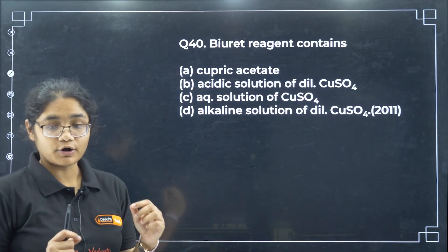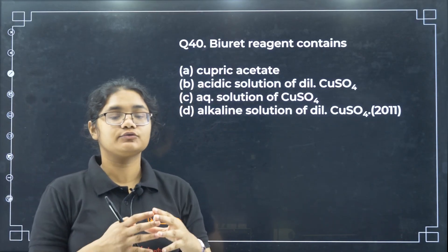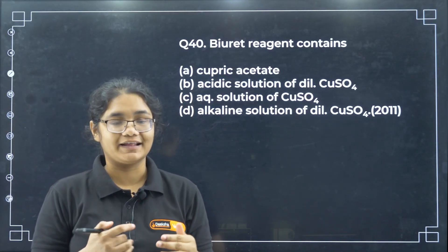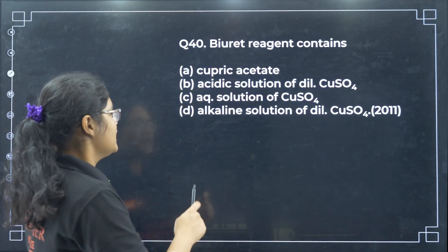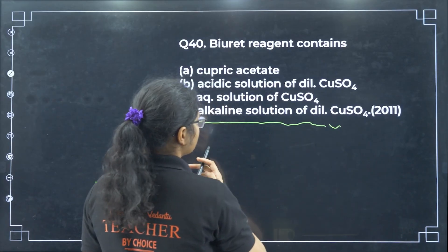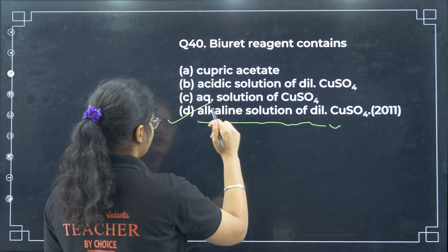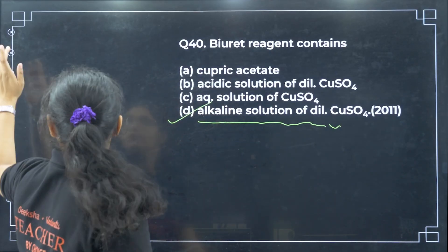Question 40 — Biuret reagent contains: Biuret test is used for the test of proteins and amino acids. It contains an alkaline solution of copper sulfate — option D.